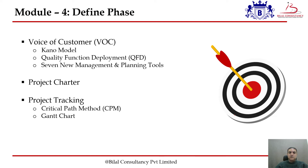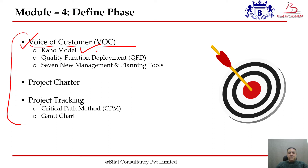In the Define phase, in order to answer these questions, we address several issues. To identify the customer and their requirements, we can use the Voice of the Customer tools such as the Kano model, which helps us identify under what circumstances the customer is going to be satisfied, unsatisfied, or delighted. In order to convert this Voice of the Customer into the process, we can use Quality Function Deployment, also known as the House of Quality, to translate the Voice of the Customer into the voice of the process — into the product or the service.